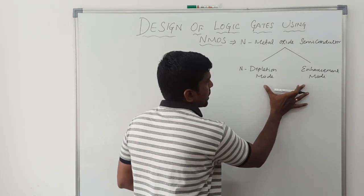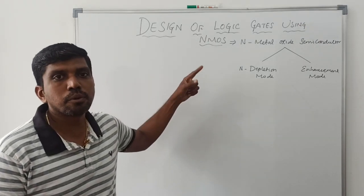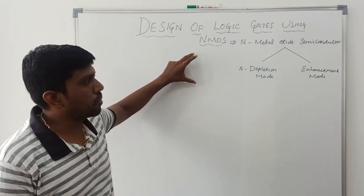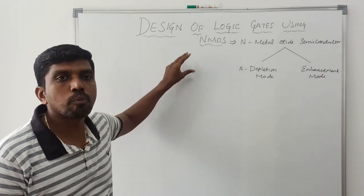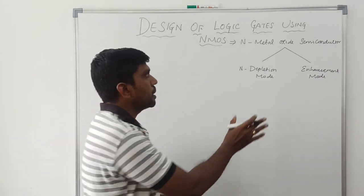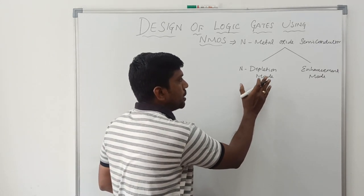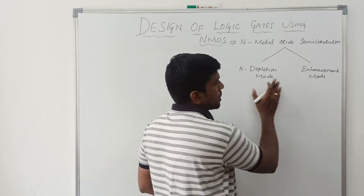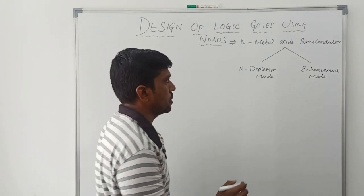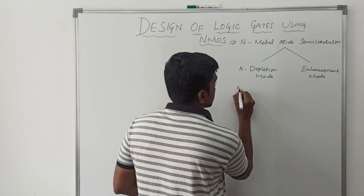In a CMOS logic circuit, both transistors are involved — the PMOS transistor and the NMOS transistor. But in NMOS logic, we are using the depletion mode transistor and also the enhancement mode transistor.